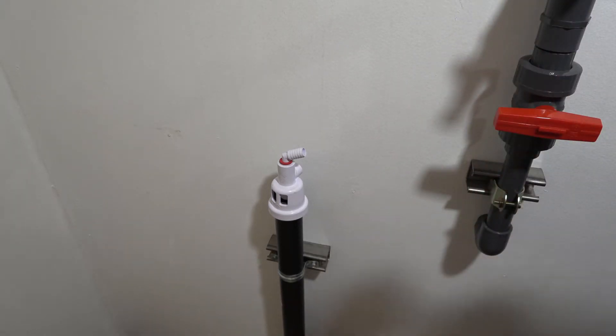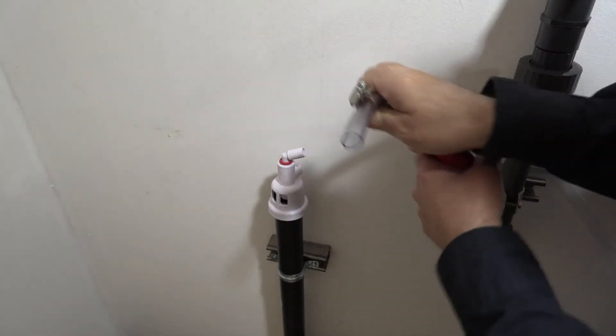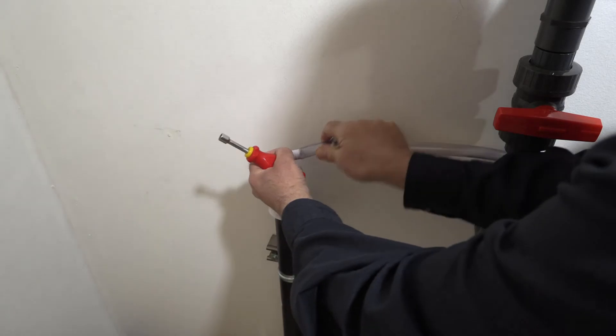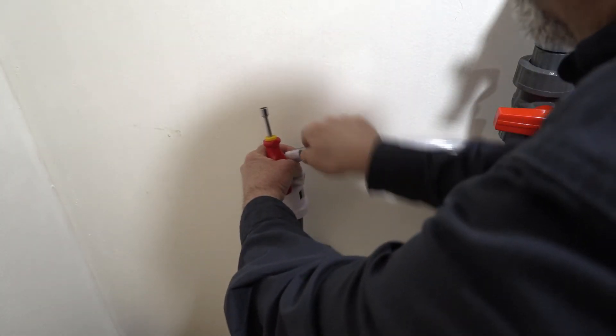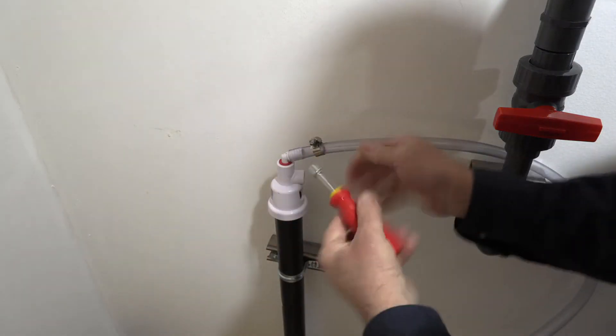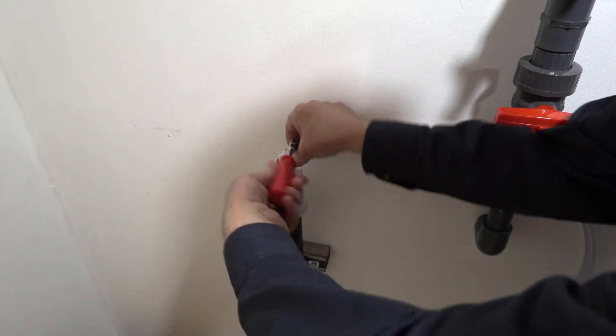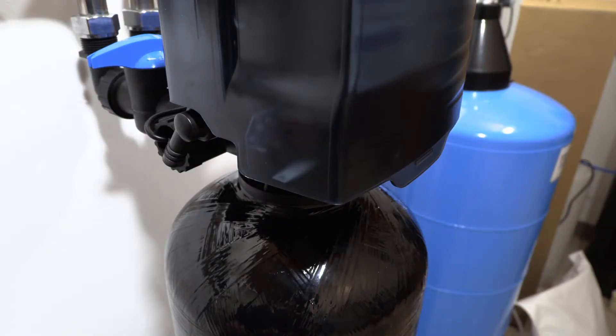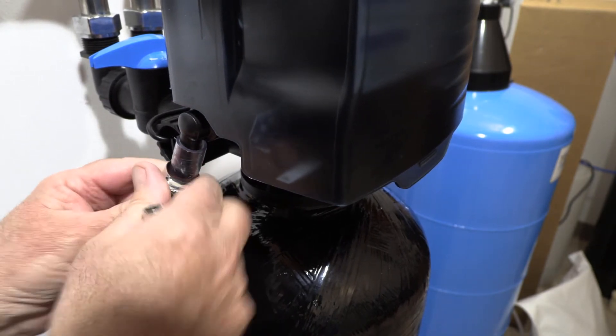We're basically just going to put this on with hose clamps. On the valve side, you'll attach it to this fitting right here. Again, it's just a barbed fitting. Slide the tubing up over it.